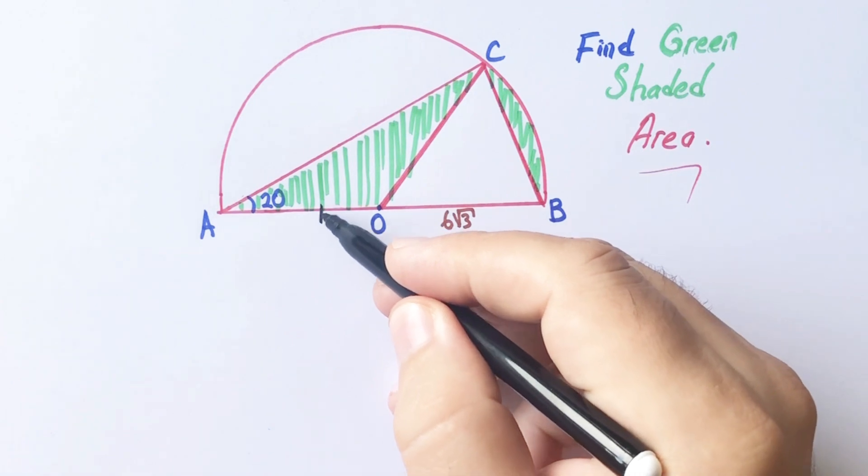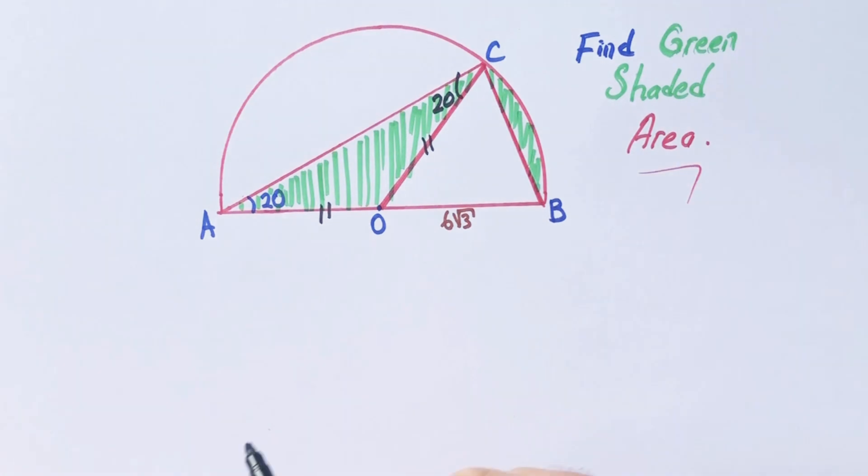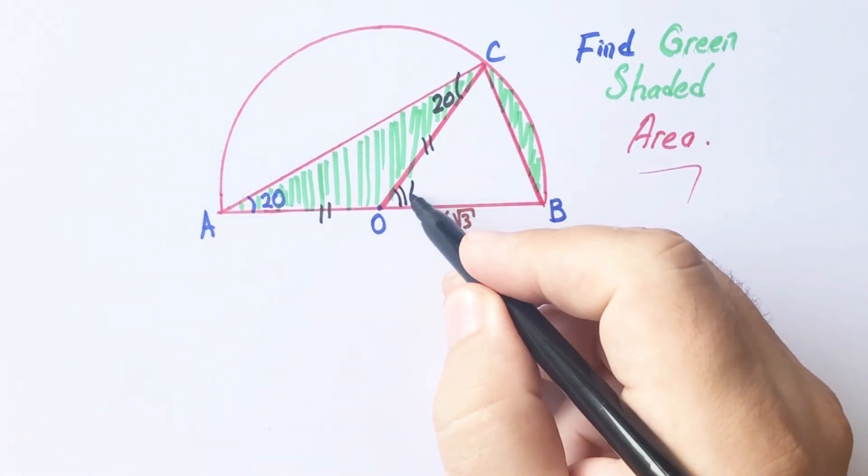These two lengths must be equal because of radius, and this angle must be 20 degrees, so here must be 40 degrees.